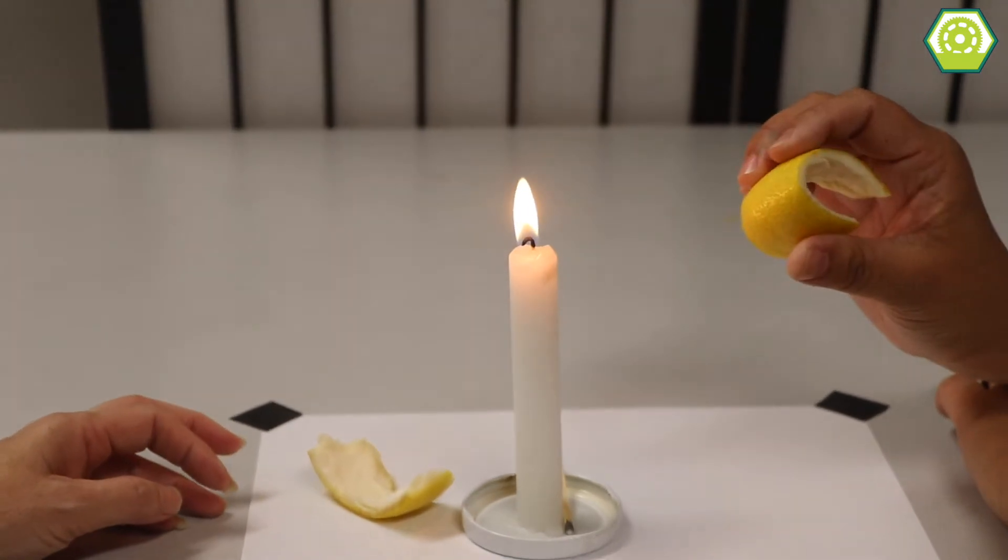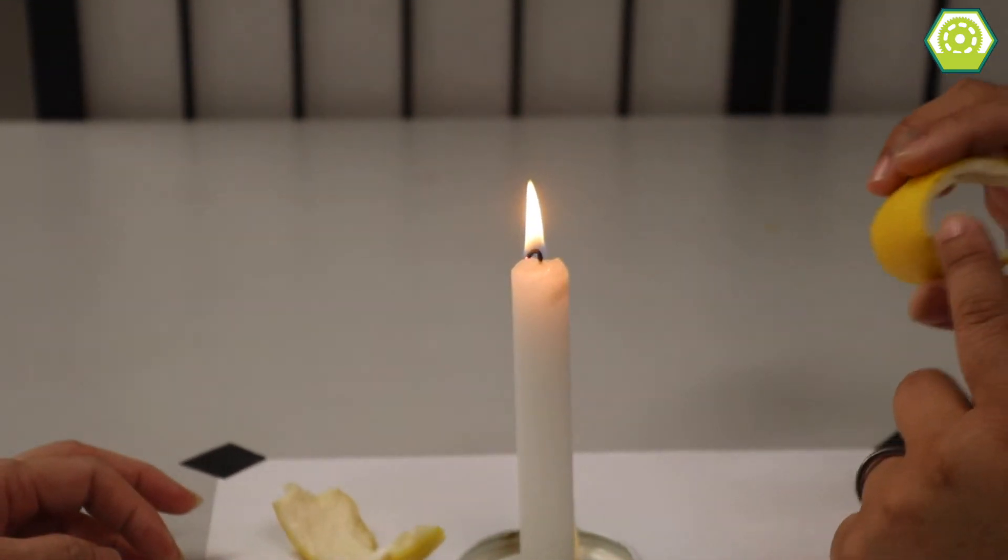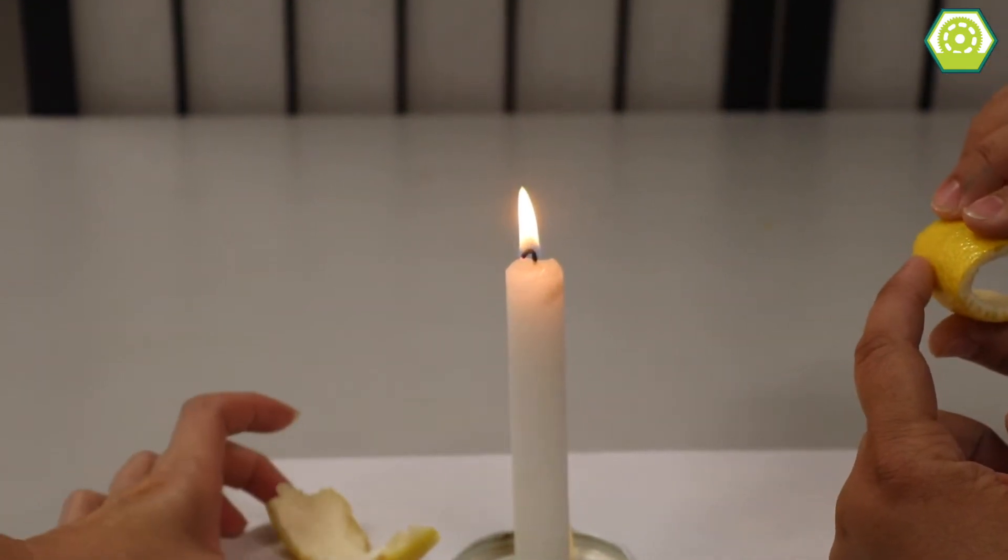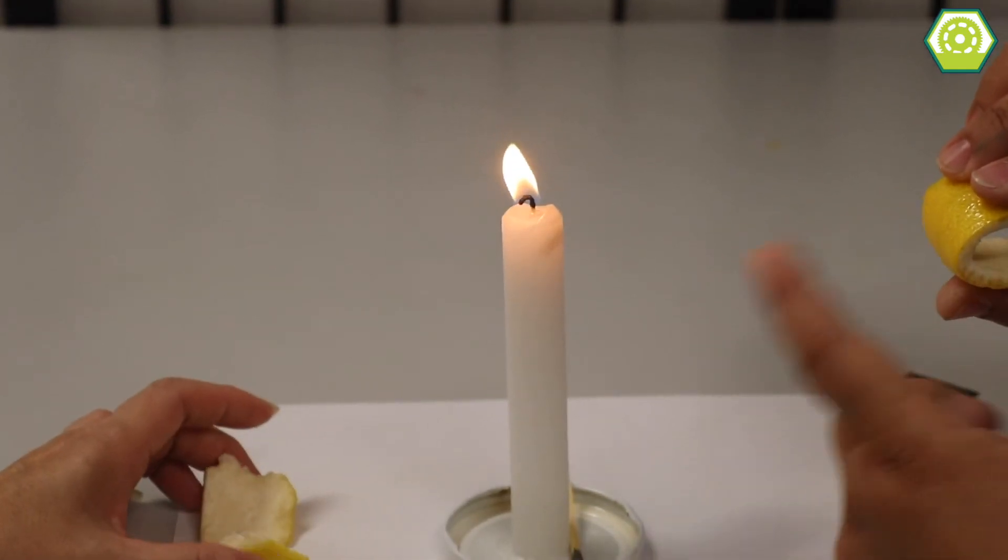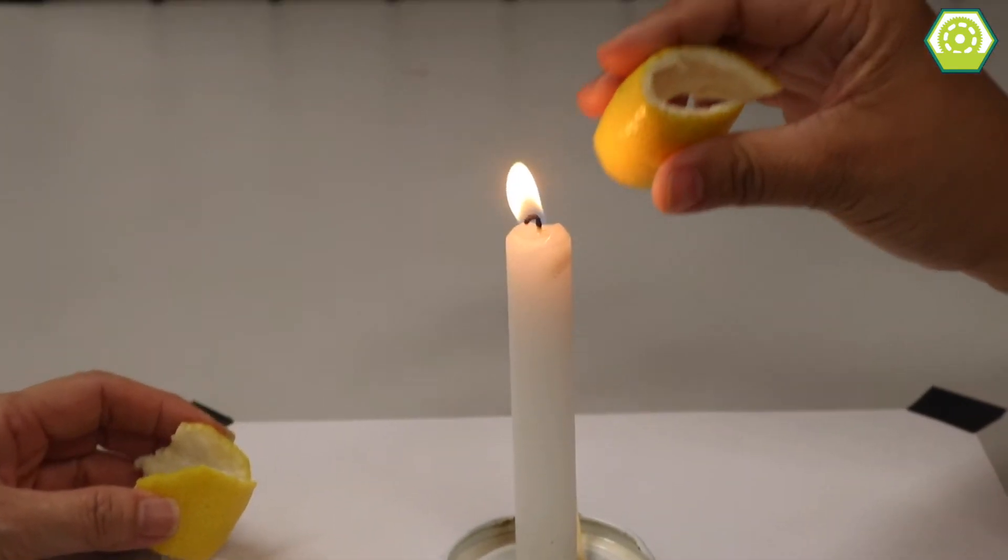And then I'm going to take this lemon peel and I'm going to bend the lemon peel. And as I bend it real tight, it's going to squirt out some of that citrus juice from that peel.